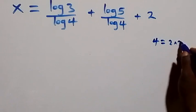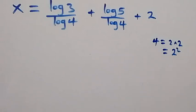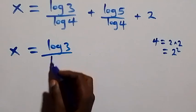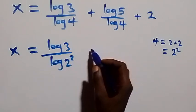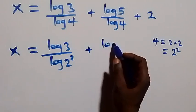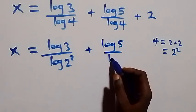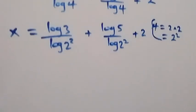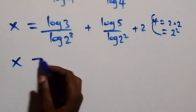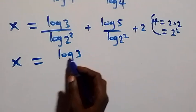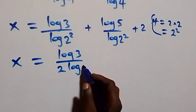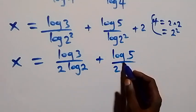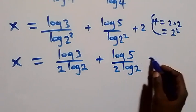That is also from here we can simplify further and write 4 as 2 squared. Then what we have here becomes x equals to log 3 over log 2 squared, plus log 5 over log 2 squared, plus 2. From here this can be written as x equals to log 3 over 2 log 2, then plus log 5 over 2 log 2, plus 2.